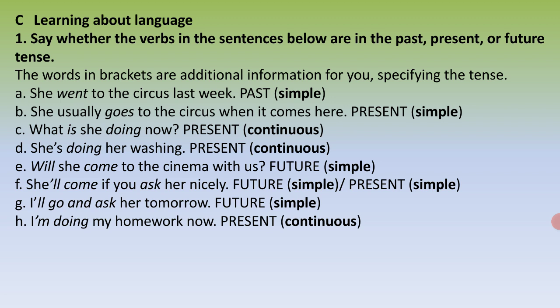Present simple. 'What is she doing now?' — present continuous. 'She is doing her washing' — present continuous. 'Will she come to the cinema with us?' — future simple. 'She will come if you ask her nicely' — future simple. 'I will go and ask her tomorrow' — future simple. 'I am doing my homework now' — present continuous.